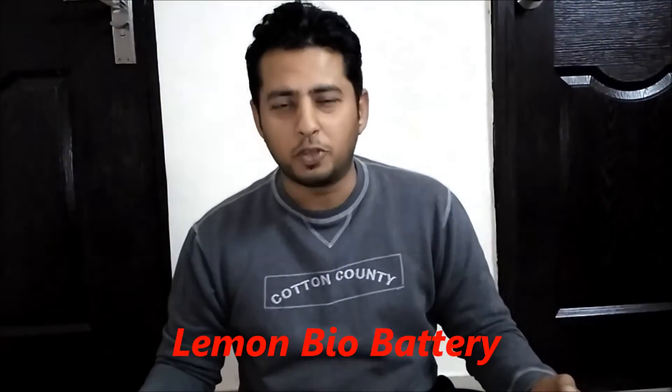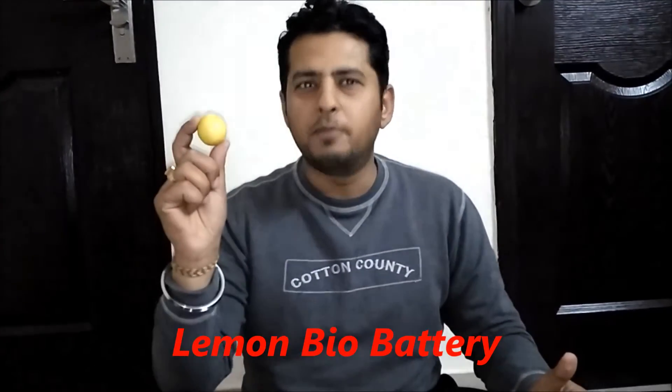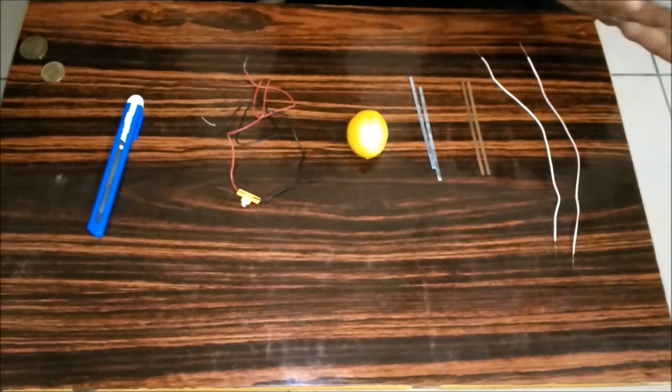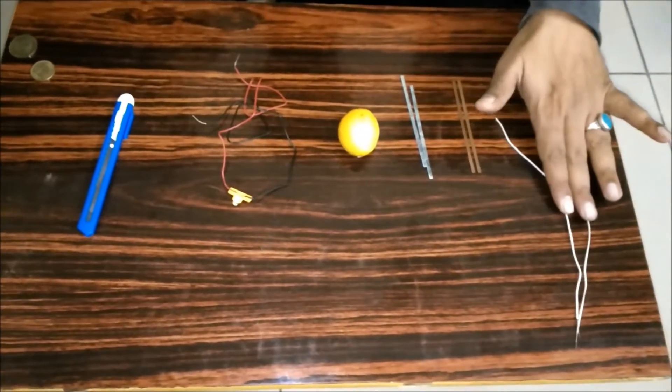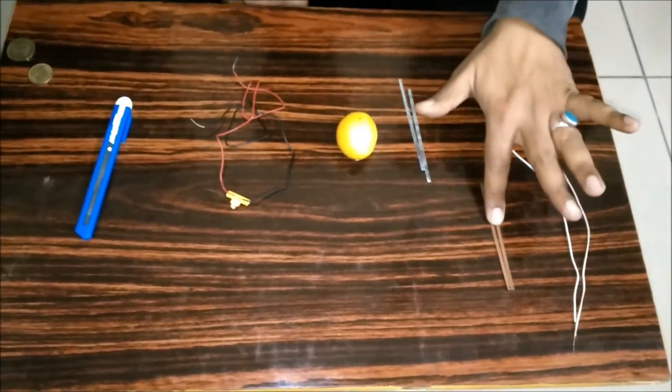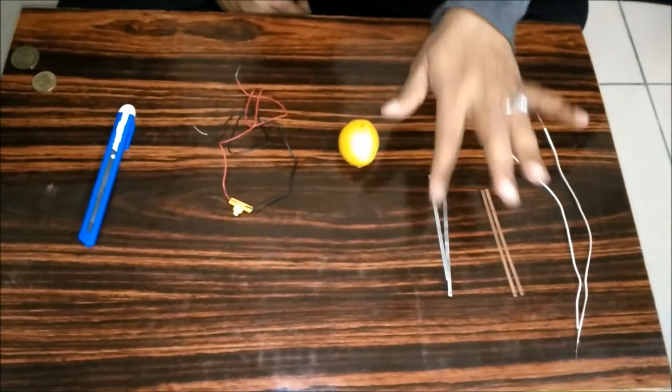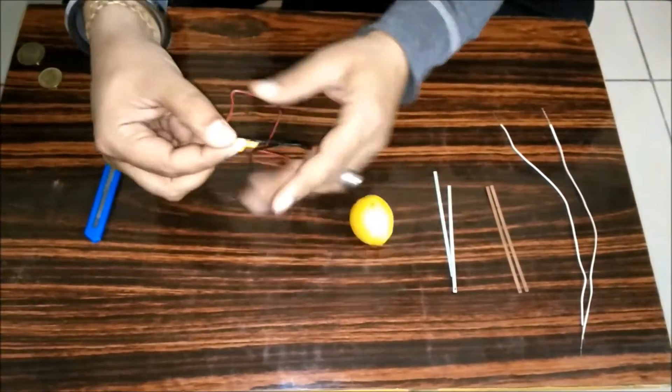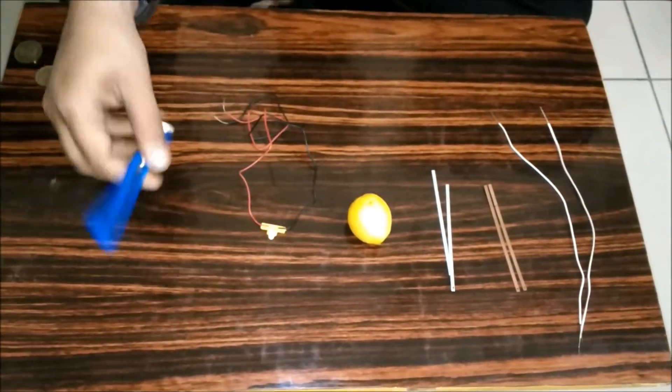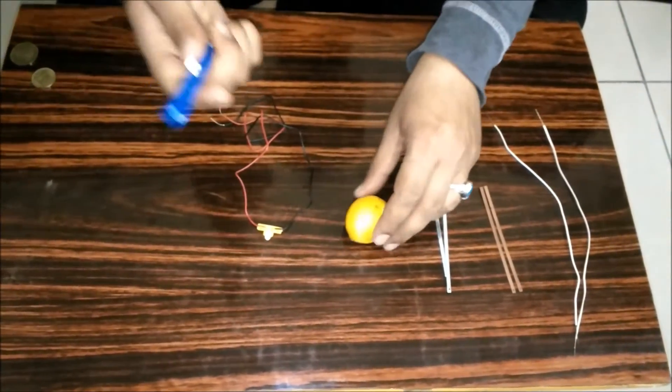Hey friends, welcome to my channel Science Buster. Today I am going to show you how to make a lemon bio battery. For this experiment we need two connecting wires, two copper strips, two zinc strips, a lemon, LED light connected with wire, and a cutter. Now let's start the project.